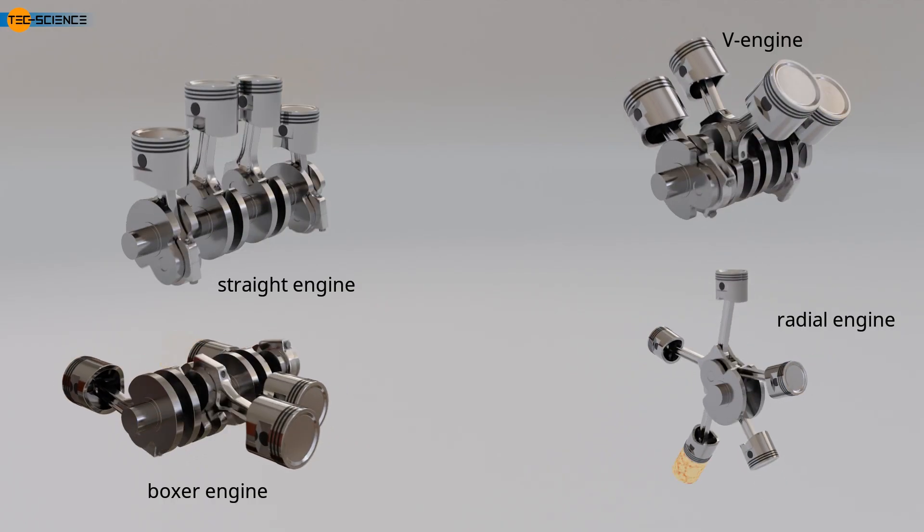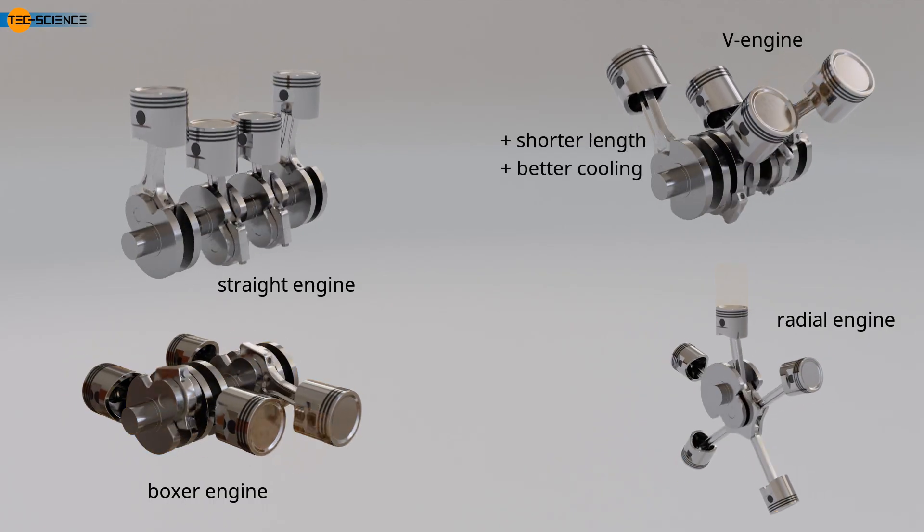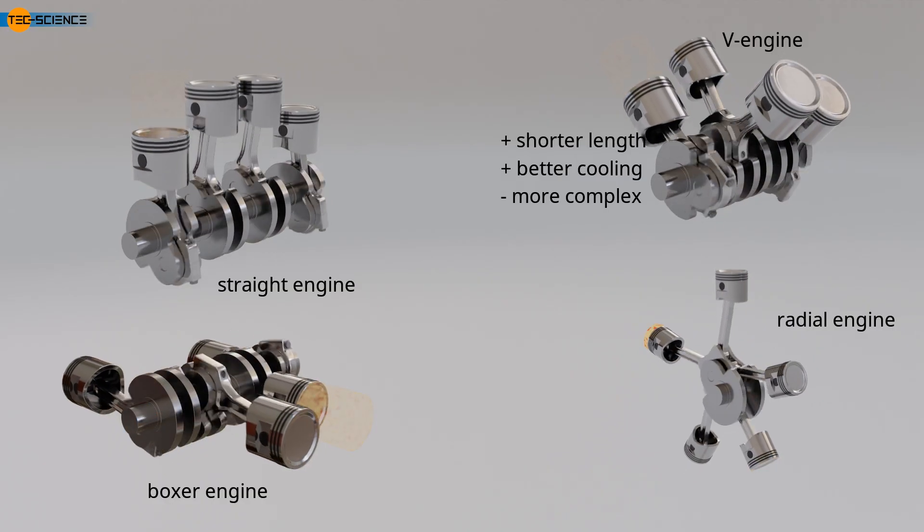Compared to inline engines, V-engines have a shorter length and can be better cooled with air cooling, as the cylinders are more evenly exposed to the airflow. However, V-engines are often more complicated to manufacture, as components like cylinder heads and camshafts need to be duplicated. Additionally, two exhaust manifolds are often required.